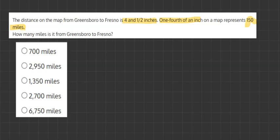We have to convert our four and a half inches into quarter inches and then multiply it by 150 miles. So let's start off with the 4.5 for four and a half inches and multiply it by one fourth or quarter.